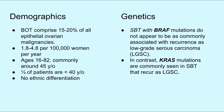The BRAF and KRAS mutations appear to be common in both ovarian APSTs and in early stage ovarian LGSCs. However, BRAF mutations in ovarian APSTs do not appear to be as commonly associated with BOT recurrence as LGSC, as opposed to KRAS mutations, which are more commonly seen in ovarian APSTs that recur as LGSC.